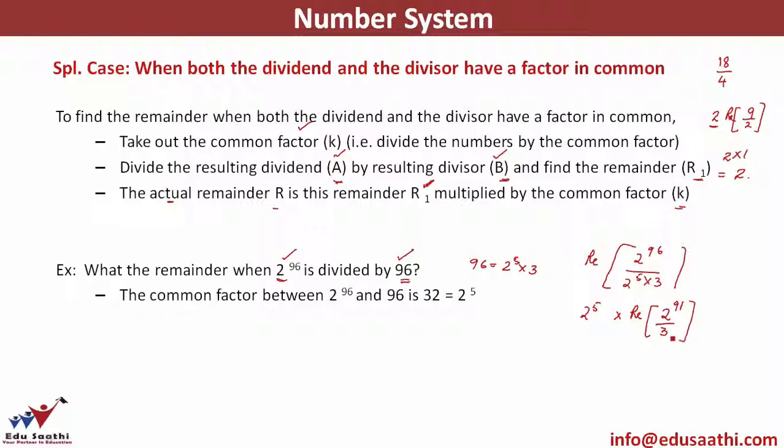To find the remainder, you can write this as 2 × 2 × 2, 91 times. If you combine two 2s, that's 4, which when divided by 3 gives a remainder of 1. So I'll break this as (2^2)^45 × 2 divided by 3.